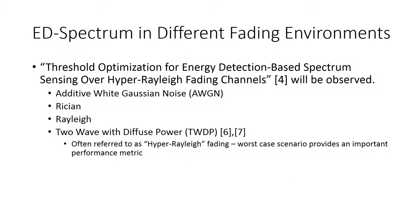For this project, threshold optimization for energy detection based spectrum sensing over hyper Rayleigh fading channels by Allen and others will be observed. Performance of energy detectors will be assessed over several channels, including additive white Gaussian noise, Rician fading channels, Rayleigh channels, as well as a relatively new distribution known as two-wave with diffuse power (TWDP). This has often been referred to as a form of hyper Rayleigh fading due to its significant fade loss characteristics. With a worst case scenario metric known, performance in improved conditions or less severe fading channels can be better gauged.